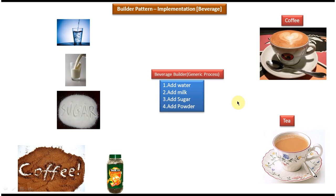Using this generic process I can prepare coffee, tea, Bournvita, Horlicks, and so on. This is the best example of the builder design pattern. We will now see how to prepare the class diagram and implement the code for this scenario.